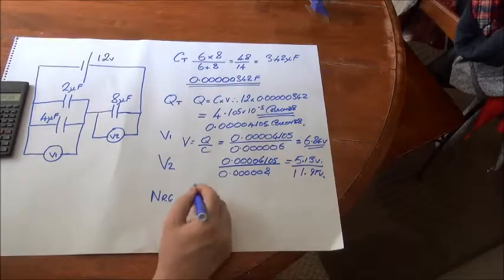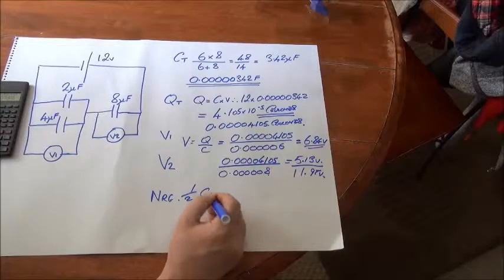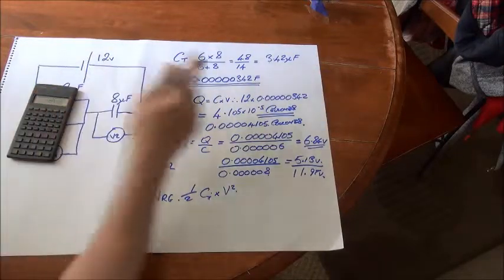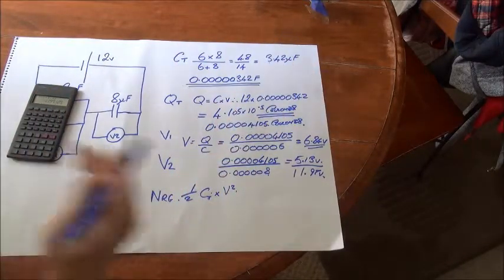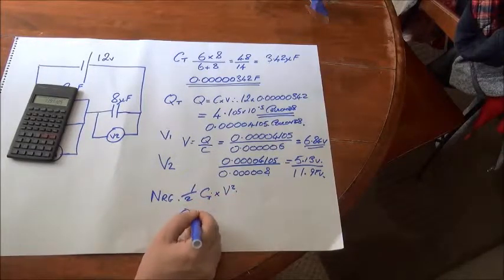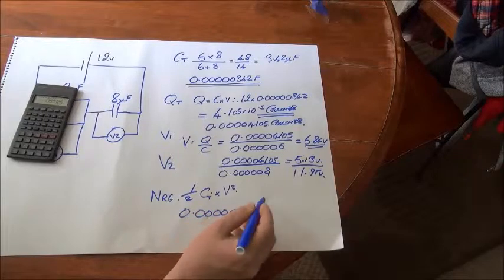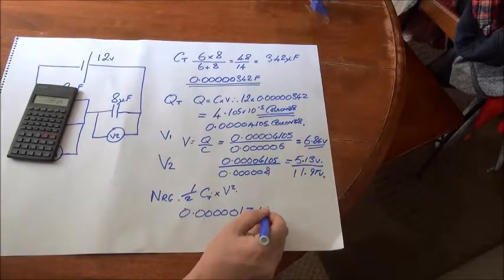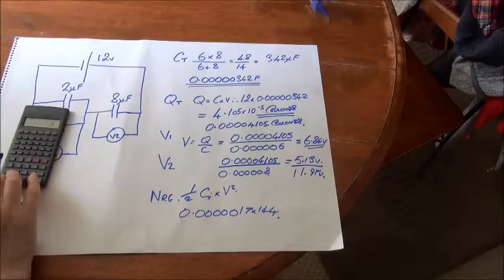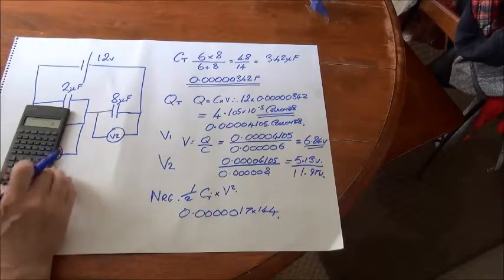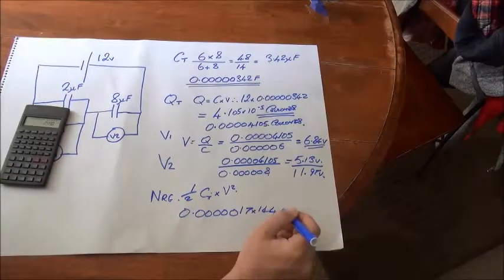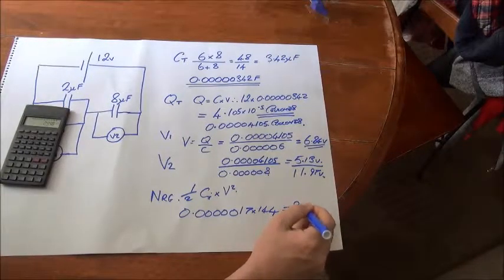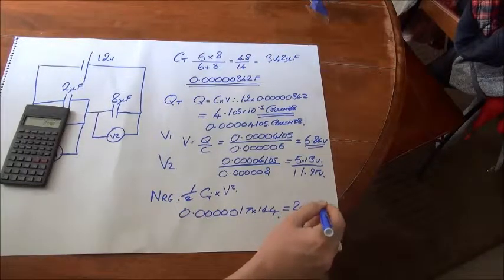And the energy, as you recall, is half C, CT times the voltage squared. So the total capacitance is 3.42 microfarads, so roughly half that's going to be about 1.7 microfarads, and multiply that by the applied voltage squared, which is 144. And this circuit has 244 microjoules of energy stored.